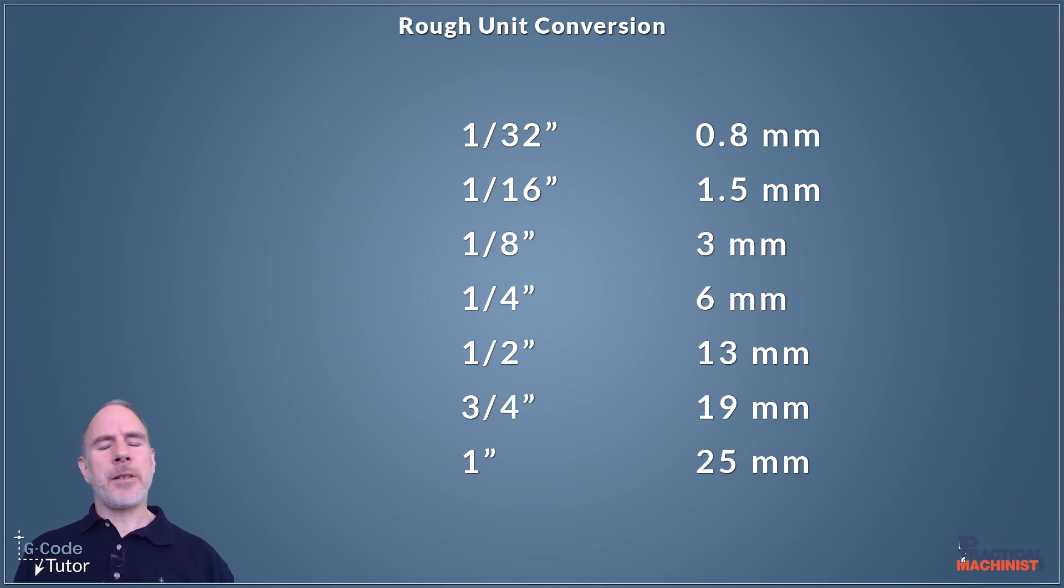By using these rough comparisons, we can picture in our heads how big a part is. For example, if we're cutting a quarter of an inch diameter, you know it's going to be roughly six mil. So we can picture how big a quarter of an inch is now in metric, because we know it's roughly six millimeters.